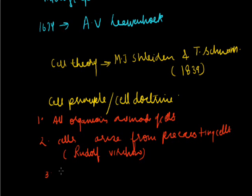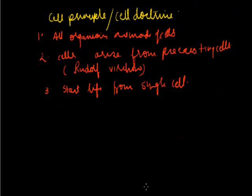The third important statement for cell theory are all the organisms start their life from a single cell and the multiplication of cell and their growth leads to growth of an organism.